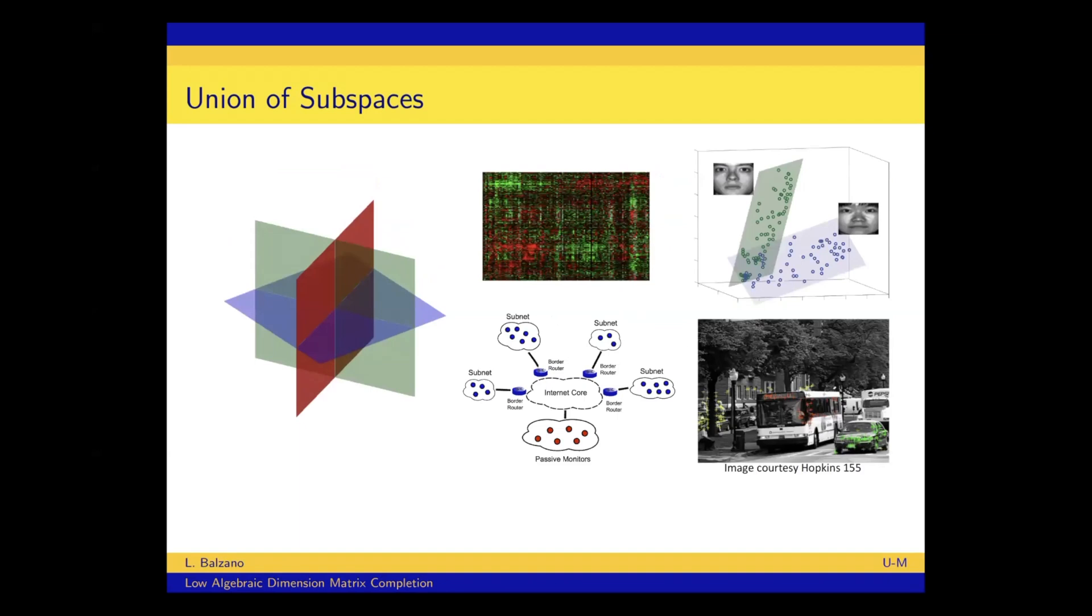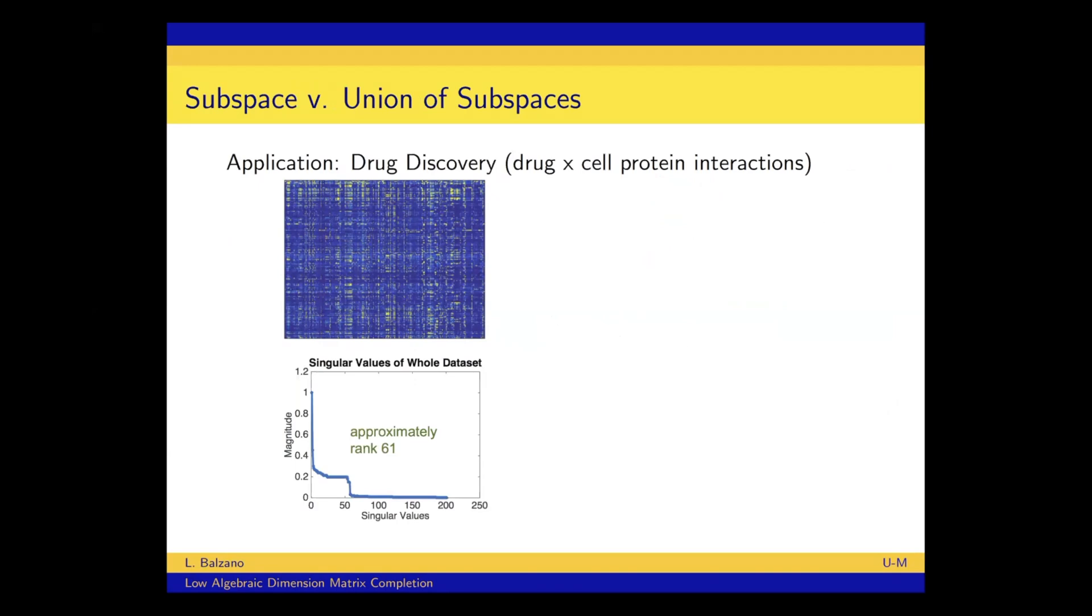So this union of subspace model has applications ranging from internet tomography, computer vision, and genomics and bioinformatics. And one of those applications, we have a data set that really nicely motivates what we're trying to do. So this data set is a drug discovery data set. And what we see in the matrix is for every drug on the rows and every cell protein on the columns, that point in the matrix gives whether that drug had an interaction with the protein in an experiment. So it's the level of interaction. And if you look at that matrix, it's approximately low rank. These singular values drop off pretty precipitously around 60.